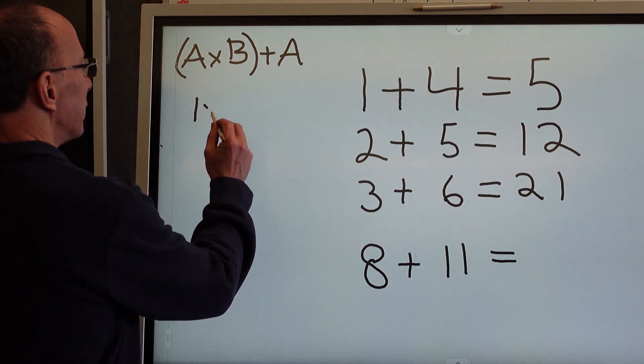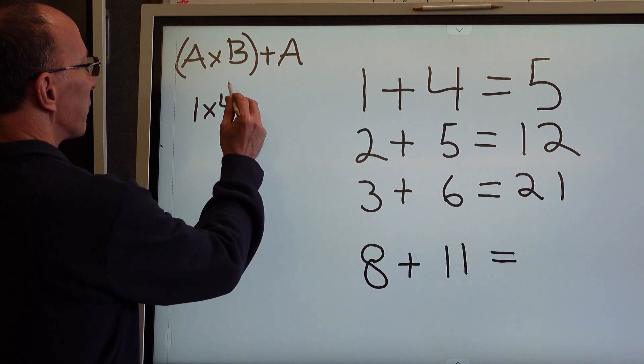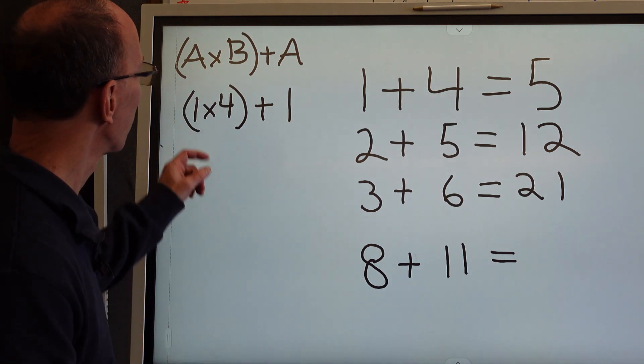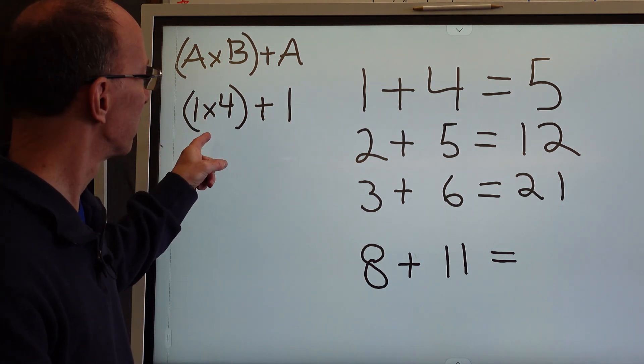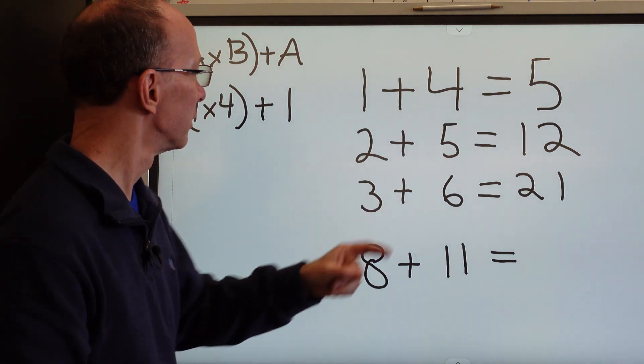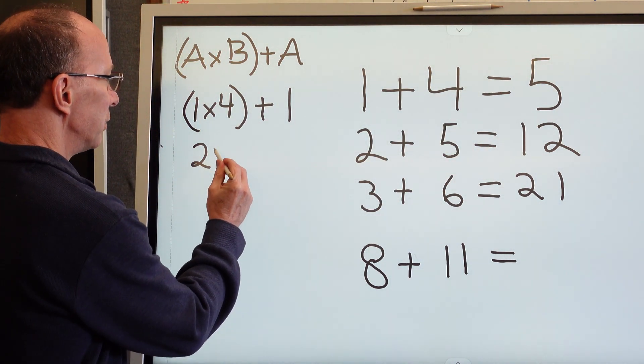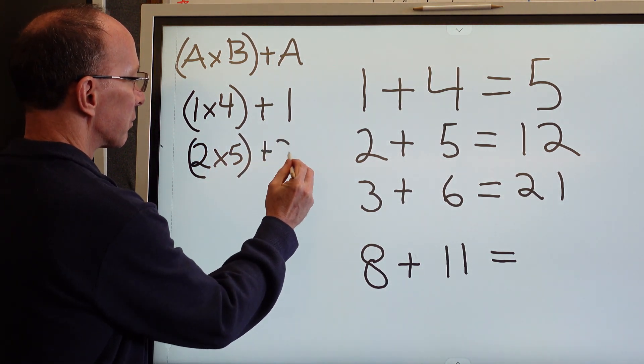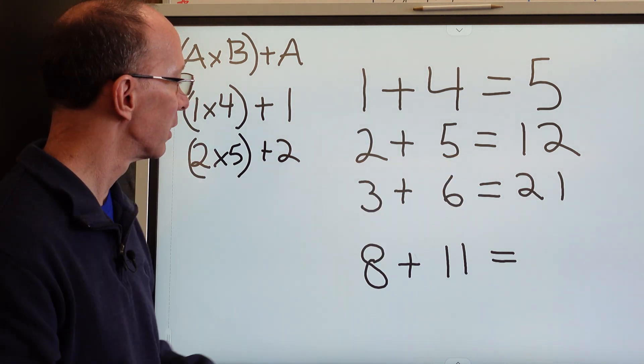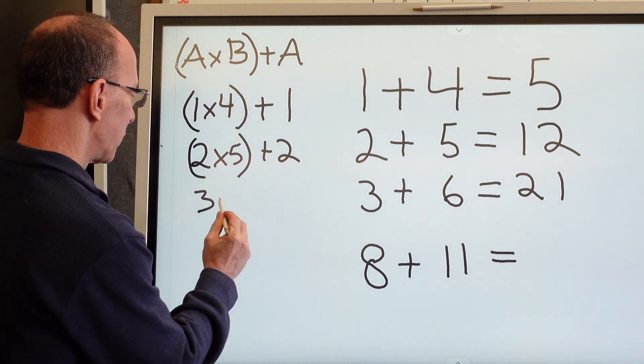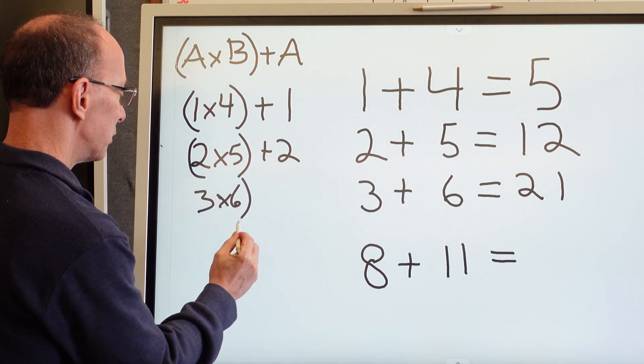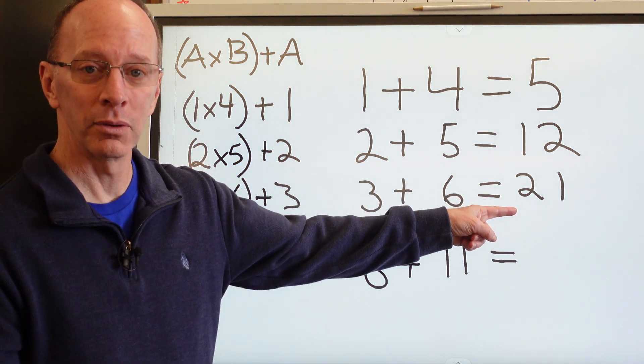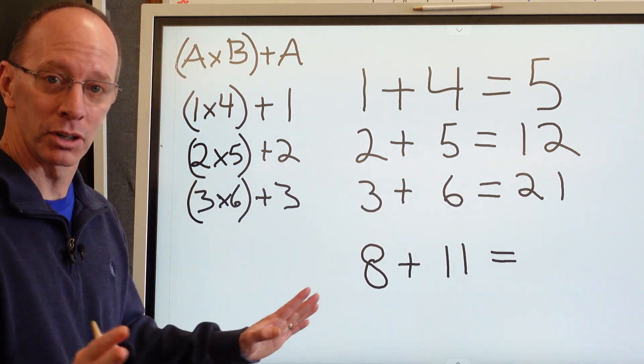So we would have 1 times 4 plus A, plus 1. So 1 times 4 is 4, plus the 1 would be 5. That makes sense. Let's go ahead and keep going. We have 2 times 5 plus the 2, that equals 12. So then we have 3 times 6, which is 18, plus the 3 equals 21. Looking good so far.